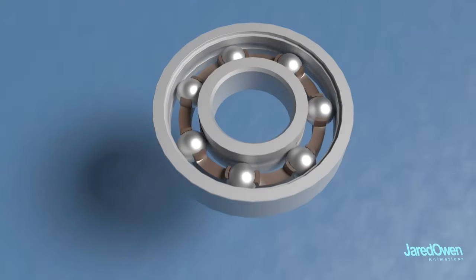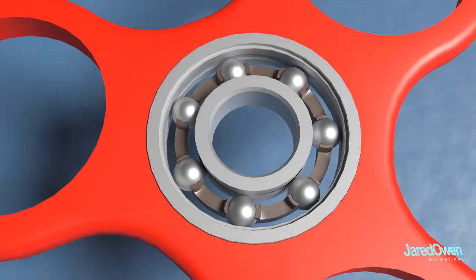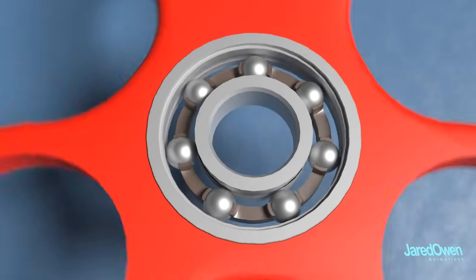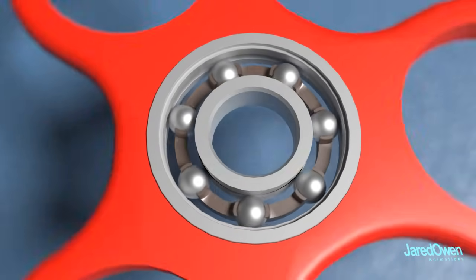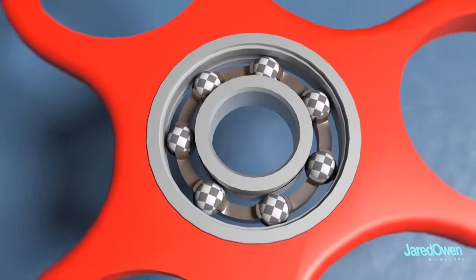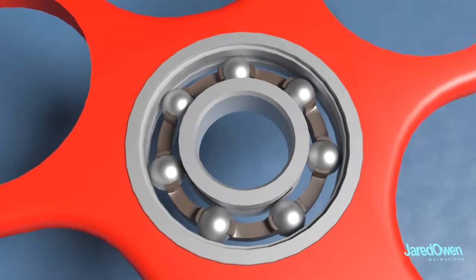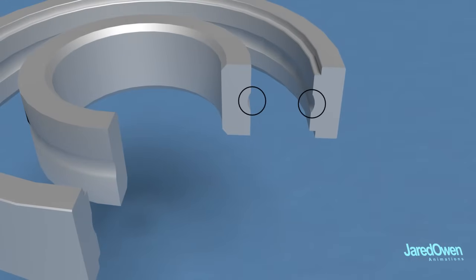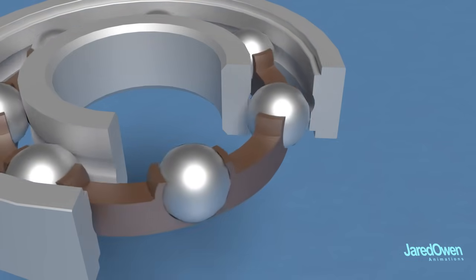The outer ring spins along with the rest of the spinner. The balls in the middle are what allows it to spin so well. They roll along as the outer ring spins. You'll notice grooves here on both the inner and outer rings which guide the balls. The cage keeps the balls evenly spaced apart, which holds the inner ring in place.